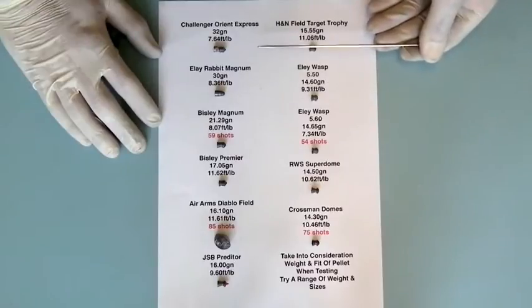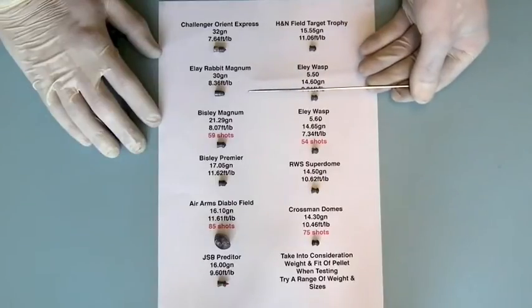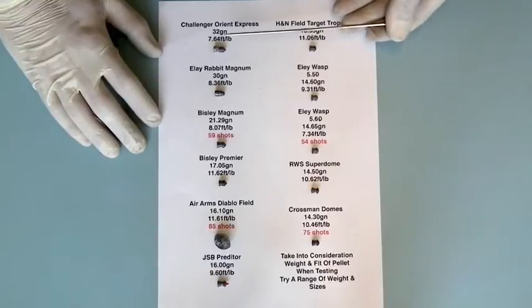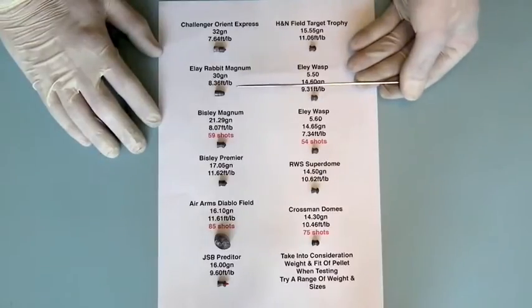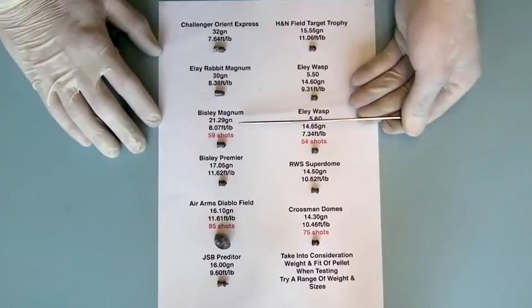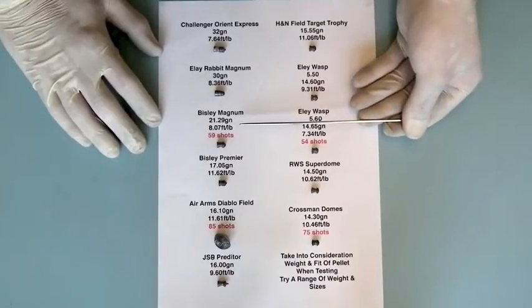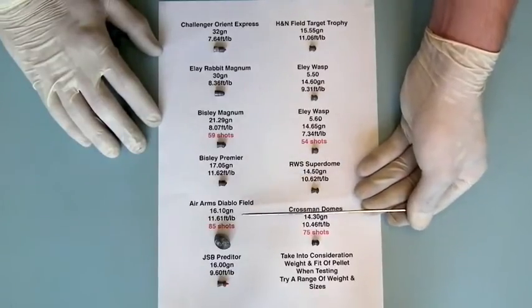With the first two pellets, these very heavyweight ones at 32 grains and 30 grains, both of these were no throw and they had to be downsized until they're a nice and good fit in the barrel for us to get a good and consistent reading. Even with this, the heaviest pellet was only doing 7.64 foot-pounds on average. The Ely Magnum was doing 8.36, slightly better—there is a two grain weight difference. The Bisley Magnum, although it was actually a good fit in the barrel, was quite a poor performer at only 8.07 foot-pounds, where the Bisley Premier was actually slightly better than the pellets the gun was set up for. The control pellet, these were given 11.62 foot-pounds, so very slightly better.